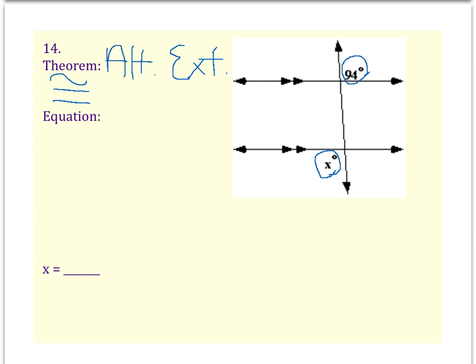In this case, if they're congruent, you just set the two things equal to each other. x equals 94. And in this case, there's nothing to solve. x equals 94, so you already have your answer.